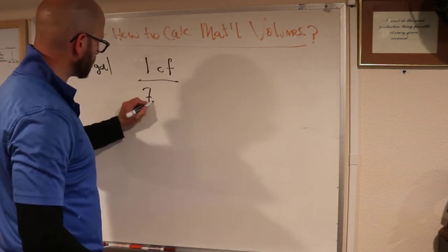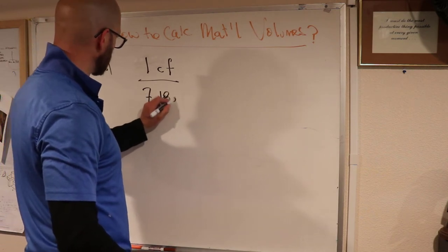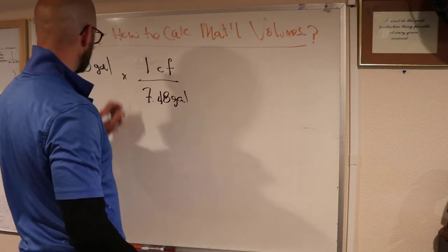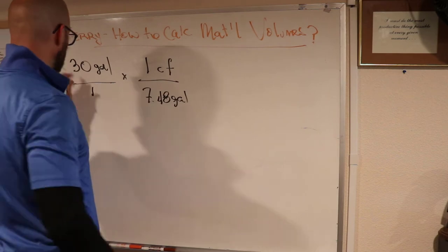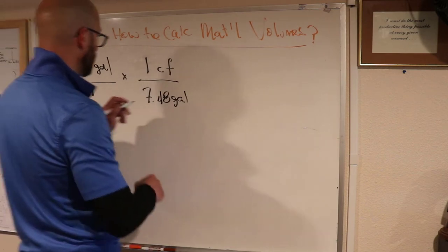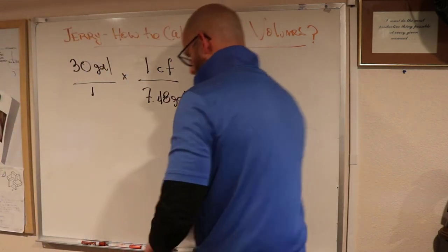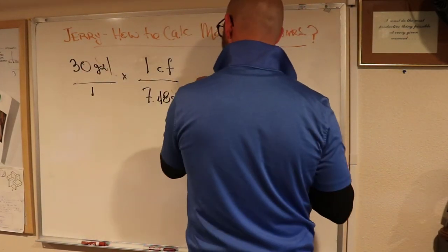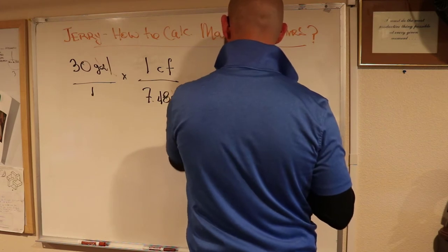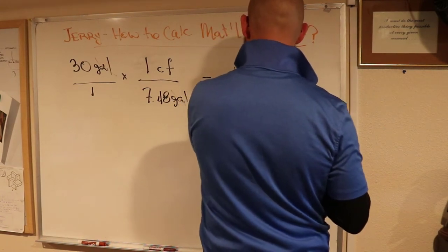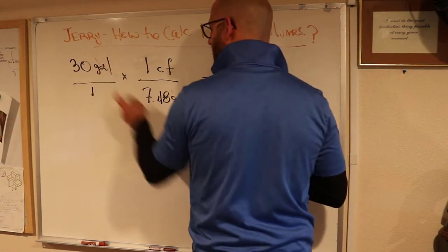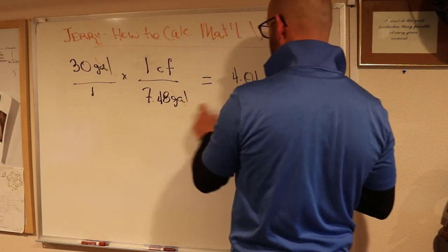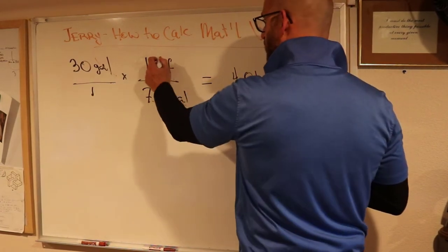So Brooke, can I get 30 divided by 7.48? 4.01. So in a 30 gallon pail, I have 4.01 cubic feet. My gallons cancel out. I do 30 divided by 7.48. We're left with our cubic feet.